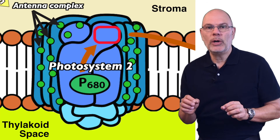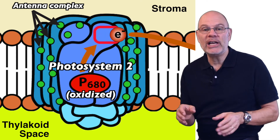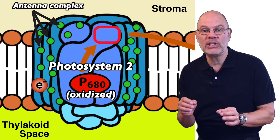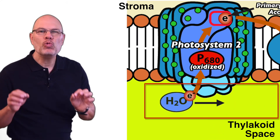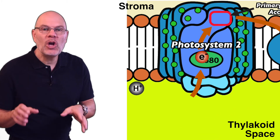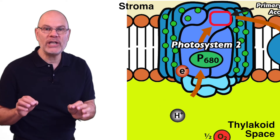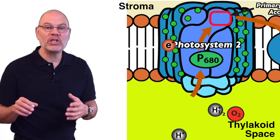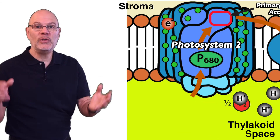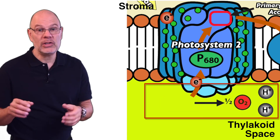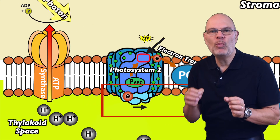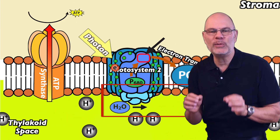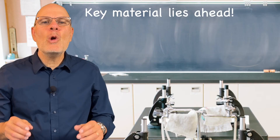Let's return to P680, which was oxidized when it lost an electron to the primary electron acceptor in photosystem II. To replace these lost electrons, a water-splitting enzyme complex in photosystem II rips electrons away from water, oxidizing it. This causes water to dissociate into two protons and one oxygen atom. The oxygen atom immediately binds with another oxygen atom to form molecular oxygen O2, which diffuses away. This splitting of water is the source of the electrons that photosynthesis is based on, and the molecular oxygen that makes up our atmosphere. The protons from water splitting also enhance the proton gradient, increasing ATP synthesis.